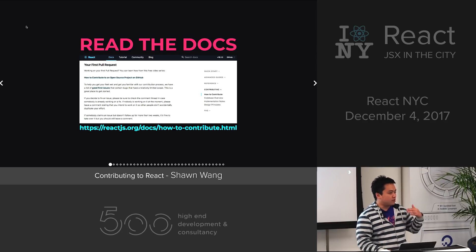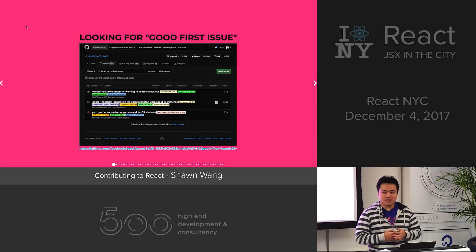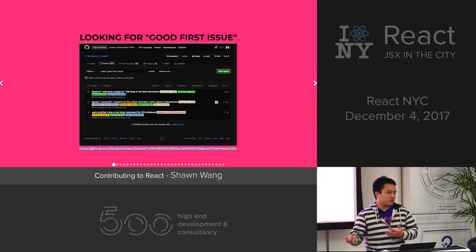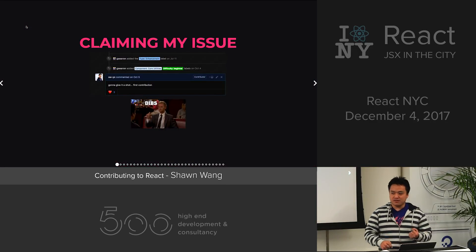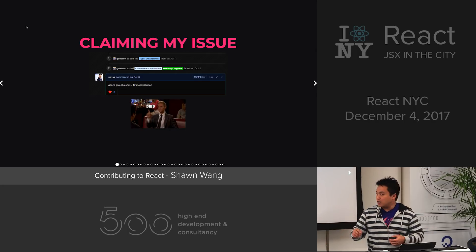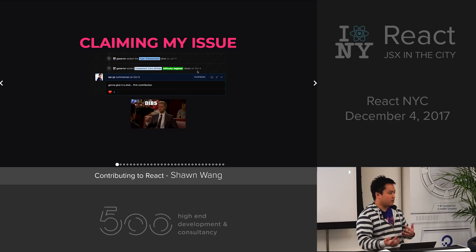They actually label good first issues and difficulty levels in their GitHub. This is a screenshot as of 2 a.m. this morning, because that's when I put this together. They kind of go through and could solve these themselves in like five minutes, but they leave them out so there's a funnel of people getting used to the React codebase and working in open source. The first thing you do is claim the issue — just calling dibs — because it's very competitive. You want to monitor the GitHub repos to claim first issues quickly.